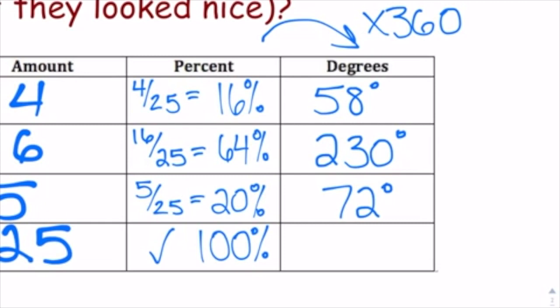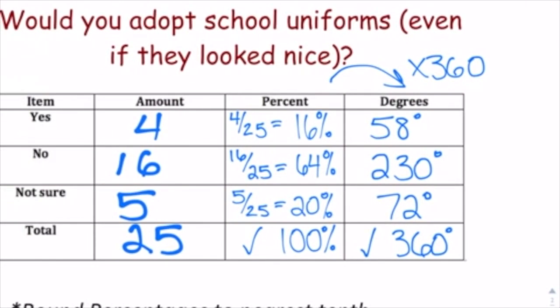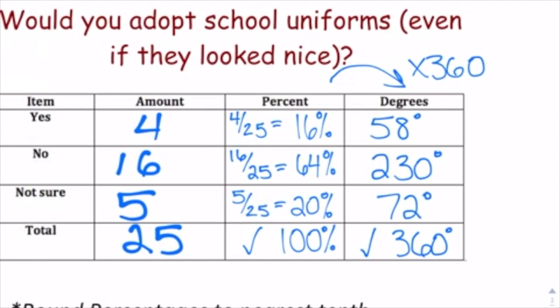When I add those up, I get 360 exactly, which tells me that everything was done accurately. And if I were off by a degree or two, that would be understandable, knowing that we did round some of our numbers.